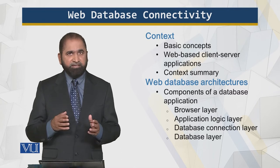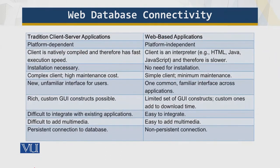Let's look at the comparison between traditional client-server applications and web-based applications. The first difference is that traditional applications are platform dependent, whereas a web application is platform independent because it runs in an environment that supports independence — it is not tied to a certain architecture, operating system, or model. It covers the three-tier architecture.